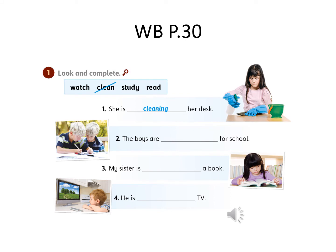Open your workbook, page 30. Look and complete using: watch, clean, study, read. Look at this girl — what is she doing? Perfect. We will use the verb 'clean' — she is cleaning. As you notice, we add ING to the verb to form the present progressive. We use the present progressive to express actions that are happening at the moment.